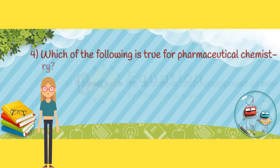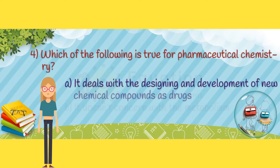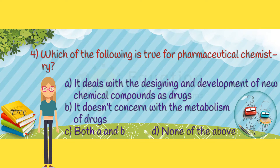Question 4. Which of the following is true for pharmaceutical chemistry? Option A: it deals with the designing and development of new chemical compounds as drugs. Option B: it doesn't concern with the metabolism of drugs. Option C: both options A and B. Option D: none of the above.